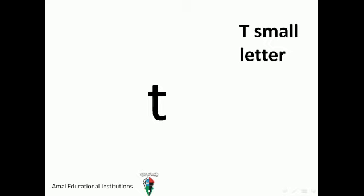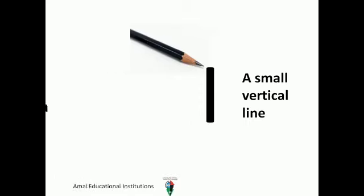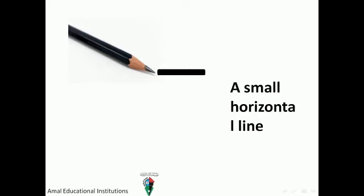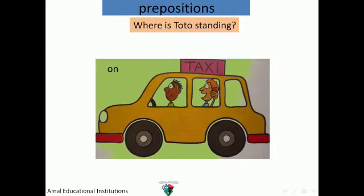How do we write t small letter? Do you know how to write t small letter? First, we draw a small, tiny, little vertical line. Then we draw a small horizontal line from left to right. And that gives us t small letter — t!